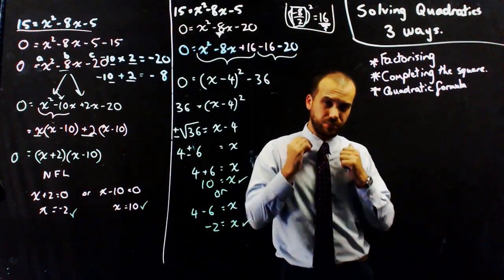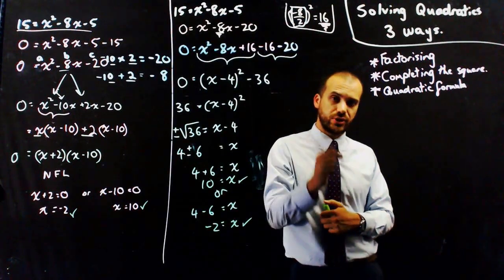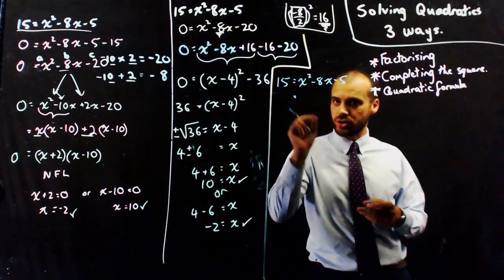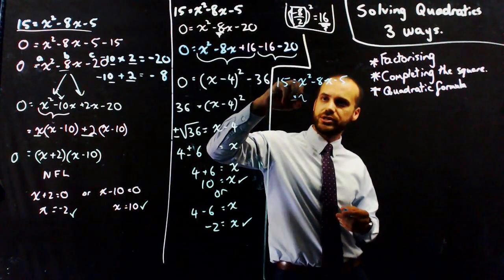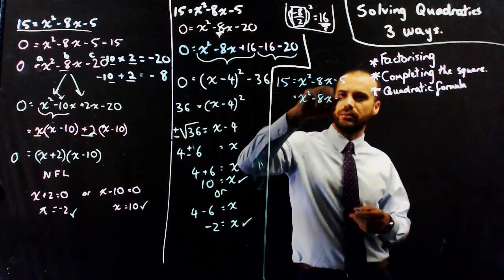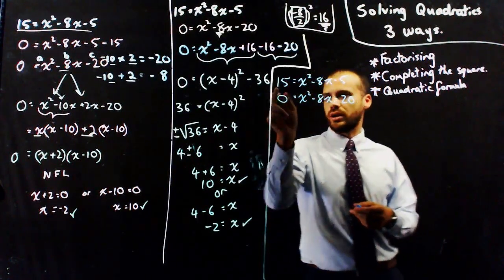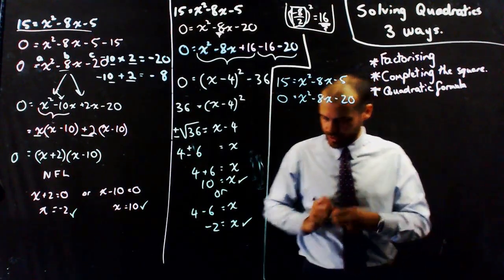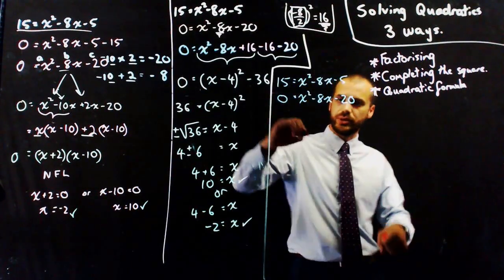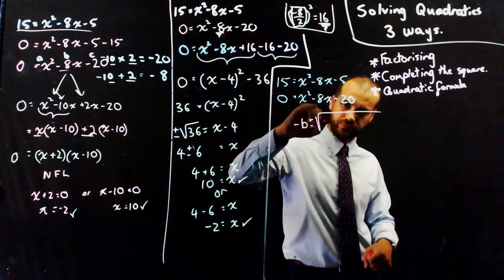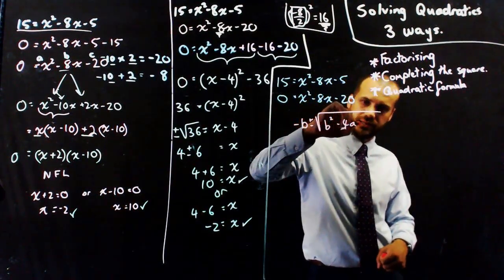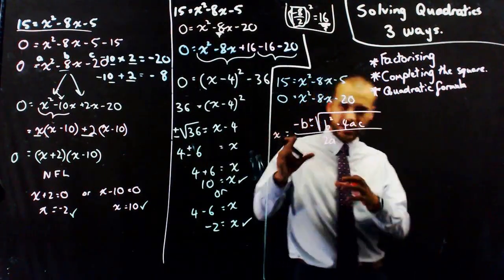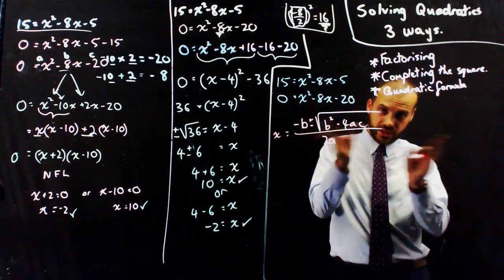I've got the same answer two ways, so I'm probably correct. There is a third way to do it, which is the quadratic formula. So here's my third method: I'm going to solve it using the quadratic formula. The first step is the same — making it equal to 0, so we get negative 20. The quadratic formula is negative b plus or minus the square root of b squared minus 4ac, all over 2a. That's what x is going to equal, and now I just sub in my values.